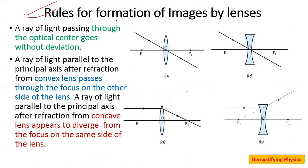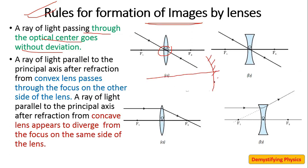Now, rules for formation of images by a lens. The first rule: a ray which passes through the optical center goes without deviation — it just passes straight through, with no bending. Note that here you draw both arrows in the same direction, because unlike a mirror there is no reflection — the ray is simply passing through.